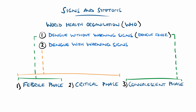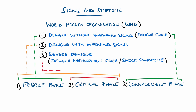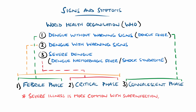Third is severe dengue, also known as dengue hemorrhagic fever and/or dengue shock syndrome. People with this enter the critical phase, and severe illness is more commonly present when there is a secondary infection with different serotypes. It is thought that 90% of dengue hemorrhagic fever occurs in children under the age of five.